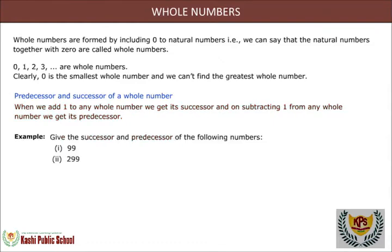Example: give the successor and predecessor of the following numbers: (i) 99 and (ii) 299. Solution: successor of 99 is equal to 99 plus 1 is equal to 100. Predecessor of 99 is equal to 99 minus 1 is equal to 98.